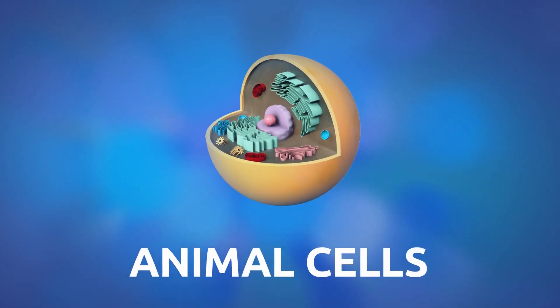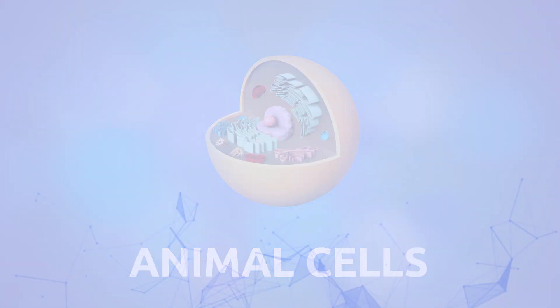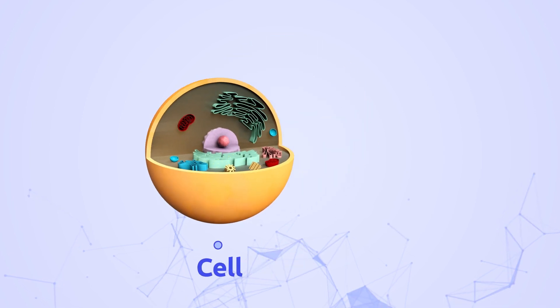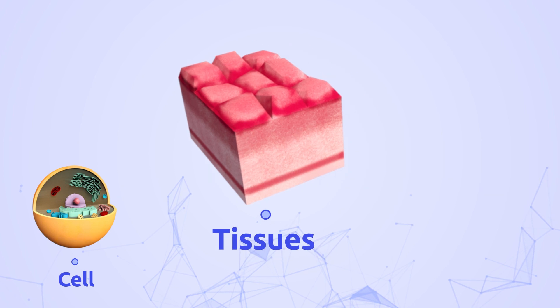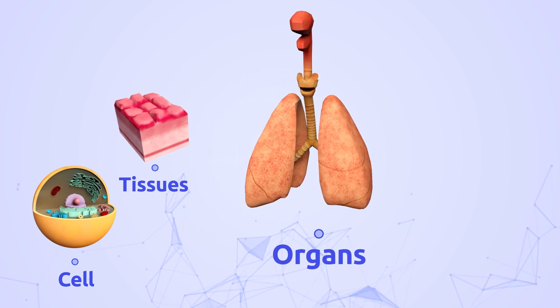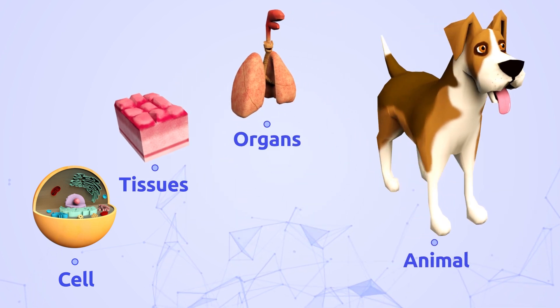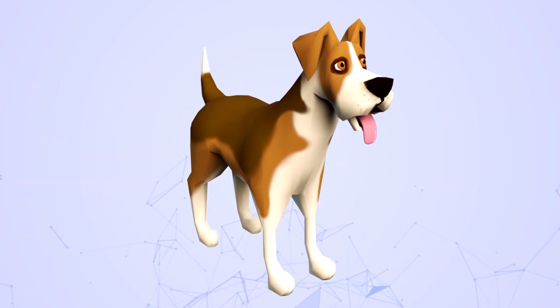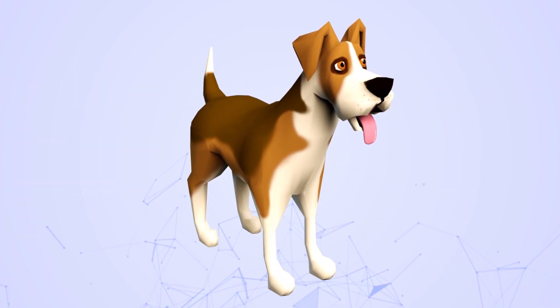Animal cells make up tissues, and these make up animal and human body organs. Each cell has a specific function depending on which organ system it belongs to.